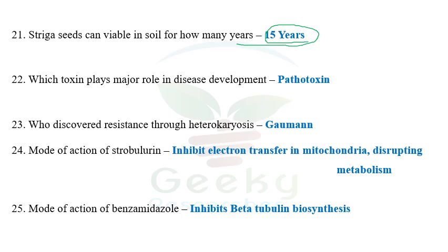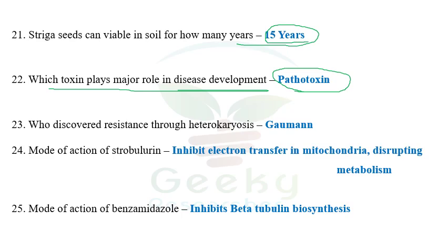The next question: which toxin plays a major role in disease development? There are three types of toxins: phytotoxin, vivotoxin, and pathotoxin. Among the three, pathotoxin plays a major role in disease development. An example of pathotoxin is pyricularin. Vivotoxin cannot be the initial inciting agent of disease development but plays a very minor role. Pathotoxin plays a very major role in disease development.